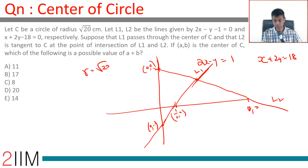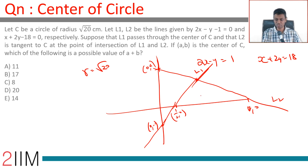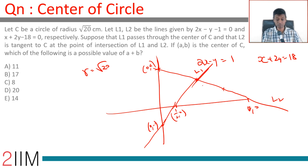So L1 passes through the center and L2 is tangent to C at the point of intersection. Let (a, b) be the center of C. Since L2 is tangent at the point of intersection, and L1 is a radius, these two lines are perpendicular — this is a radius and that is a tangent. So we need to find (a, b).